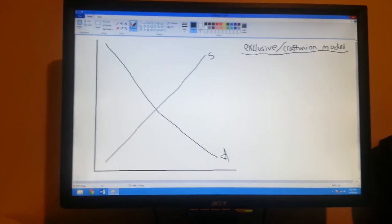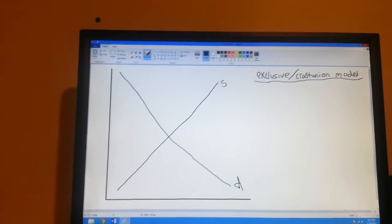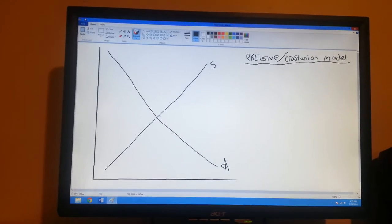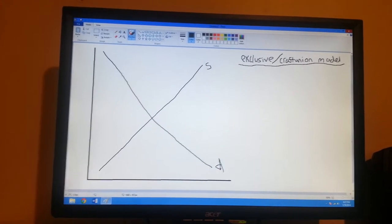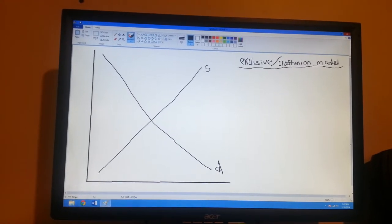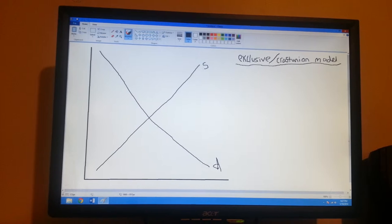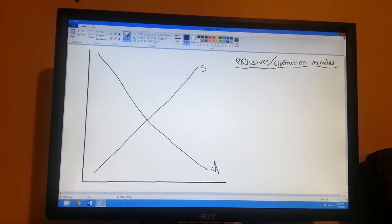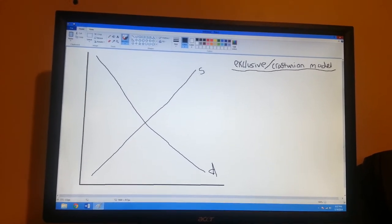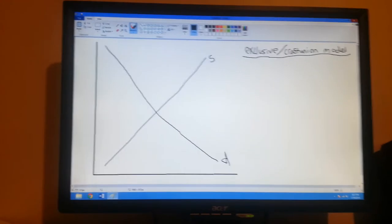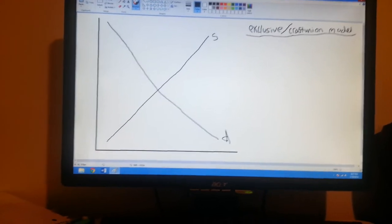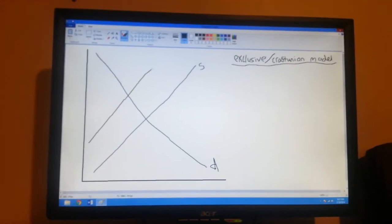In the craft union or exclusive model, unions will boost the wage rate by restricting the supply of labor to the market. This is usually done by lobbying the government for restriction to labor, by restricting immigration, reducing child labor, compulsory retirement, shorter work week, etc. And the end result will be the supply will shift to the left because it has been reduced.